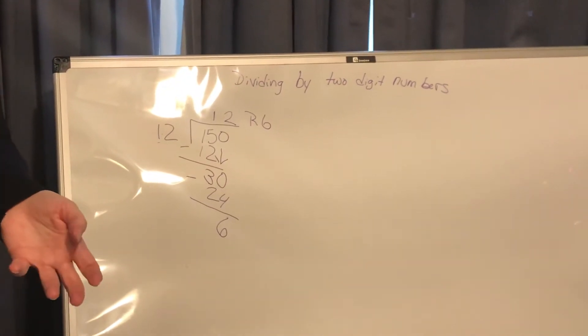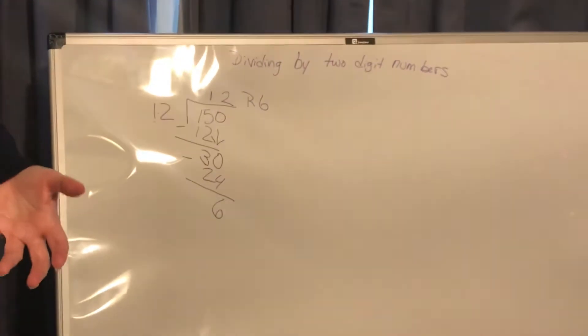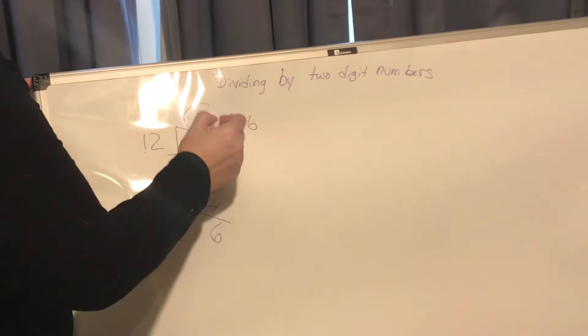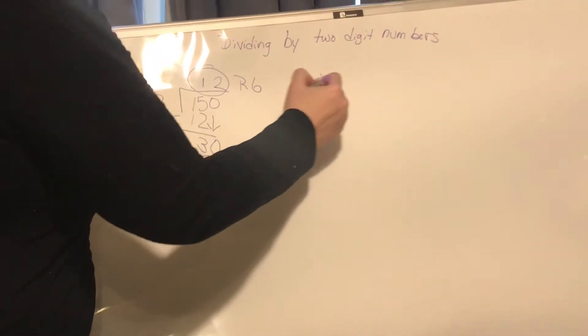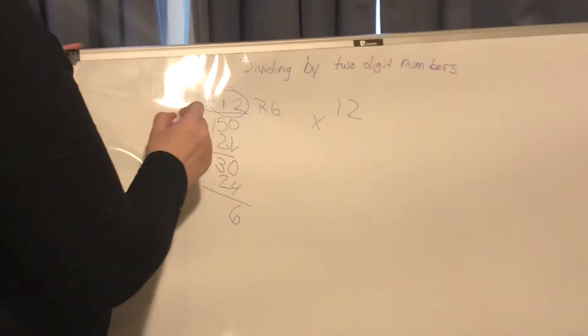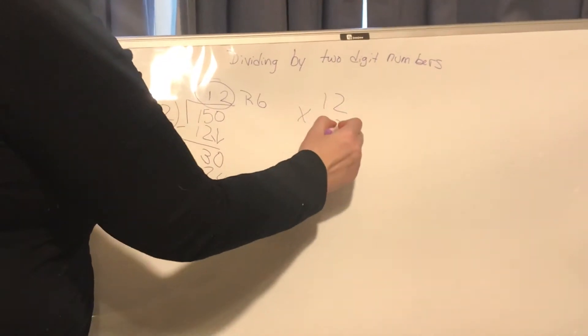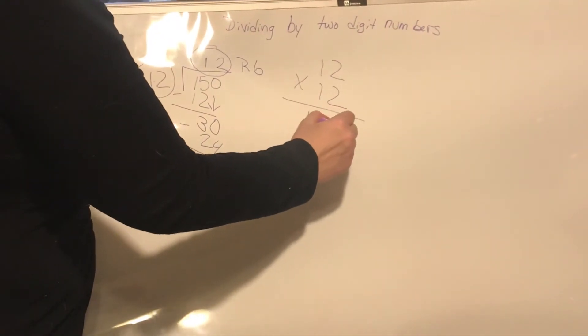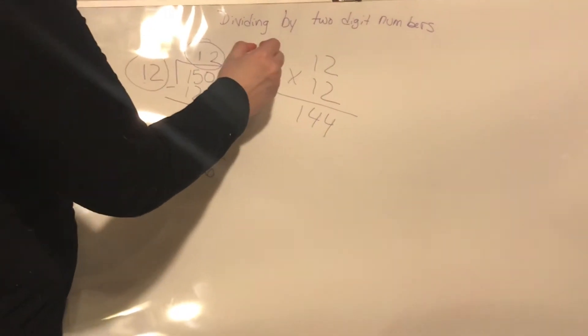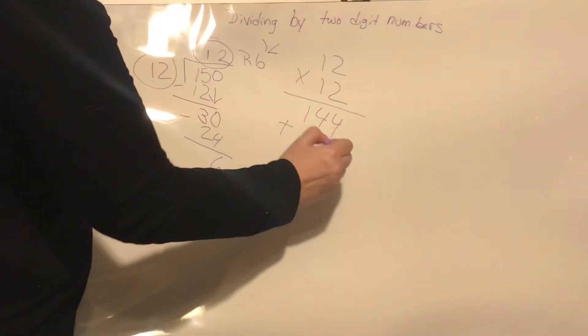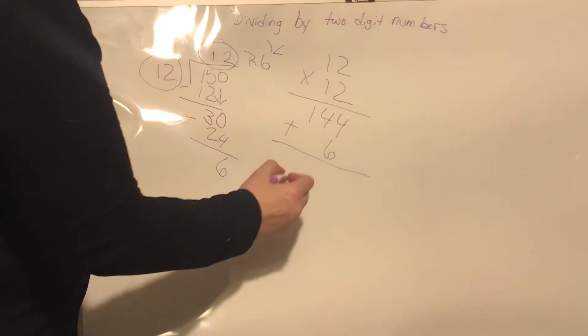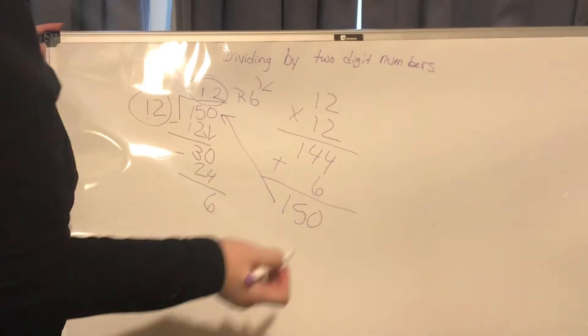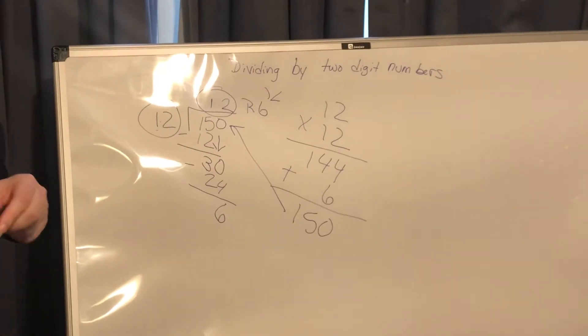What if I didn't get my math right? What if I'm questioning whether I did this right or not? This is how we check. We take the quotient 12 and we multiply it by the divisor 12. 12 times 12 is 144, and then I have to take the remainder and add it in. 144 plus 6 is 150, which matches the dividend 150. So I know that I did my math correctly.